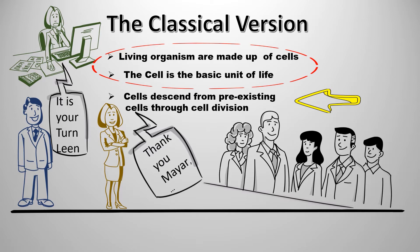The first two concepts of the classical version of the cell theory state that living organisms are made up of cells, and the cell is a basic unit of life. These two postulates are attributed to the work of two German scientists, Theodor Schwann and Matthias Jacob Schleiden, in the 1830s, after comparing their works in both animal and plant cells.